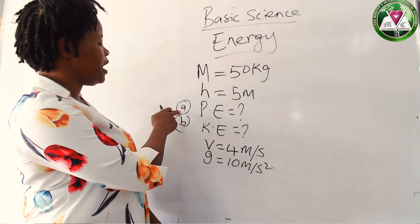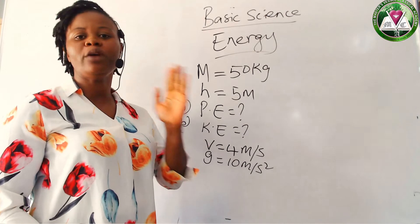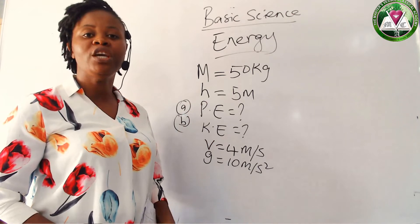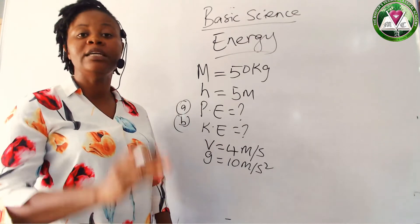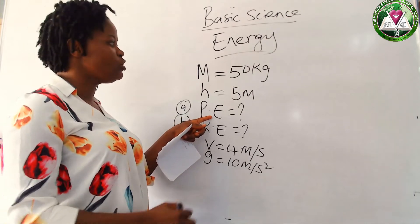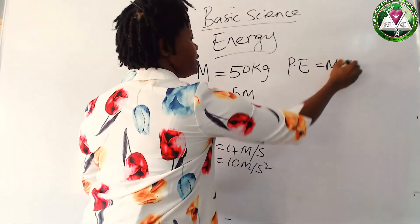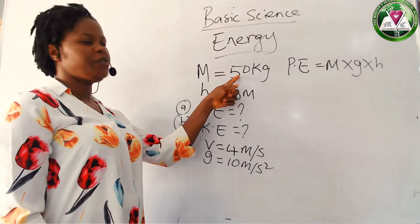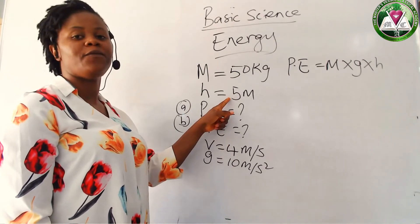The first thing we will do is calculate potential energy. I told you that potential energy can be represented mathematically as MGH — that is, mass of the body times the acceleration due to gravity times the height of the body. So potential energy, PE, is equal to M times G times H. Our M is 50 kg, our G is 10 meters per second squared, and our H is 5 meters.